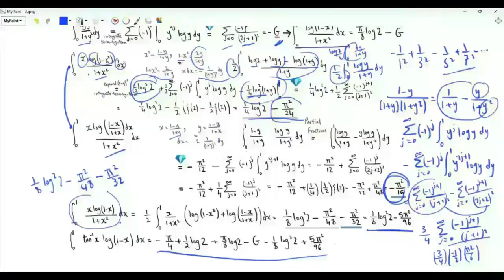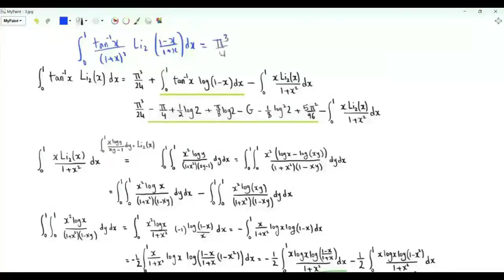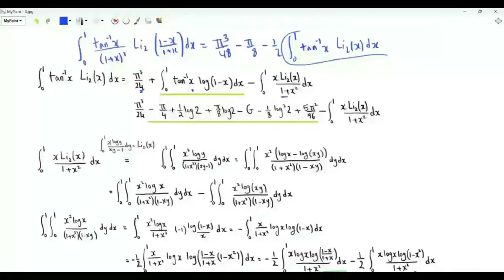Combining all results, the integral from 0 to 1 of the inverse tangent of x times log(1 minus x) is assembled from its components. On the first page, the main integral equals pi cubed over 48 minus pi over 8 minus one-half times the integral from 0 to 1 of the inverse tangent of x times the dilogarithm of x.